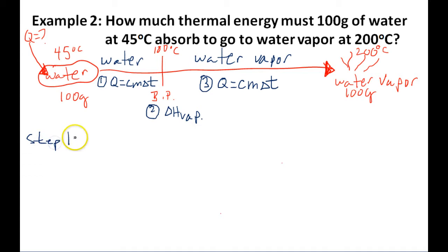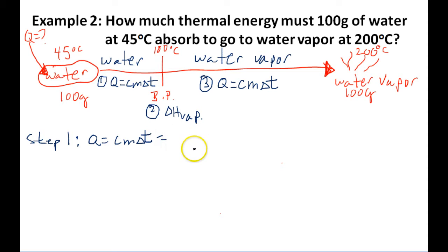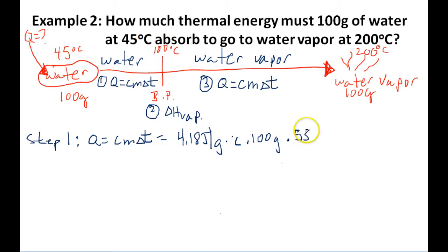Step one: we calculate how much thermal energy this water needs to absorb as it goes from 45 to 100 degrees, which is the boiling point of water. The specific heat of water is 4.18 joules per gram degree Celsius, times the mass of 100 grams, times the change in temperature from 45 to 100 — that's 55 degrees Celsius. That gives us positive 22,990 joules, since the water is absorbing thermal energy.